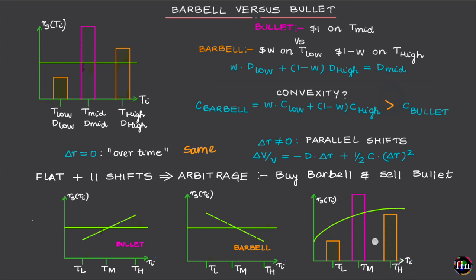The final takeaway is that from a portfolio manager's perspective, the choice between the bullet and barbell strategies depends on the interest rate forecast — whether rates are expected to stay the same, shift in parallel, steepen, or flatten. That forecast will determine which of the two strategies the portfolio manager should select.